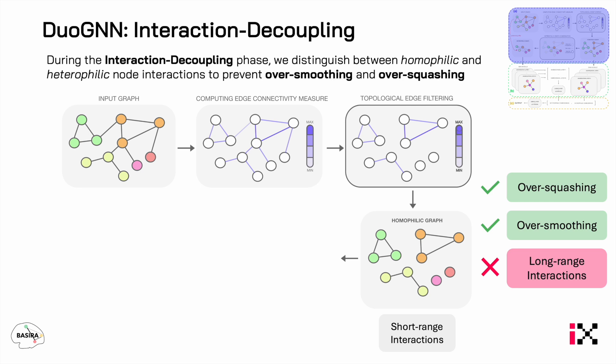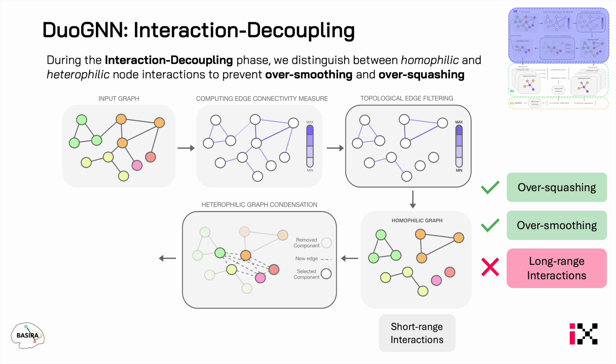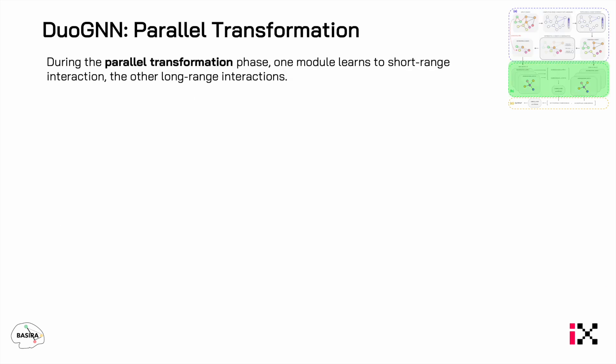Since the number of edges removed is minimal, we proceed with a heterophilic graph condensation, for which every connected component selects one node, and then we build a fully connected graph among these. The resulting graph is heterophilic, as connected nodes were likely distant in the previous graph, and it mostly represents the long-range interactions of the original graph. We can then proceed with the dual transformation stage.